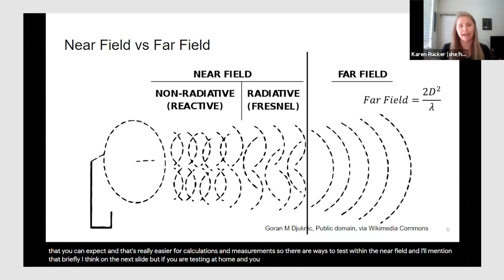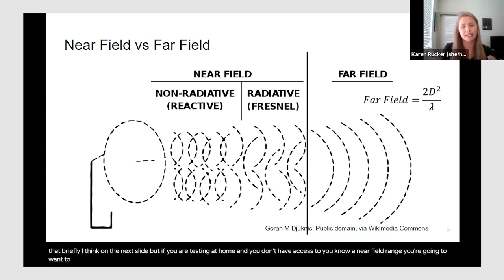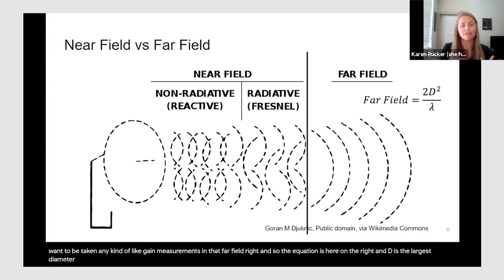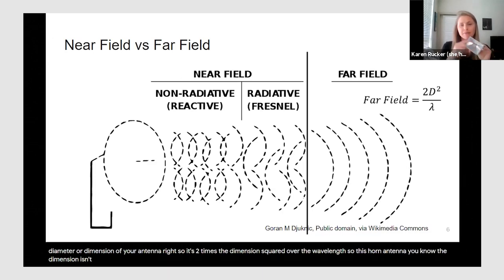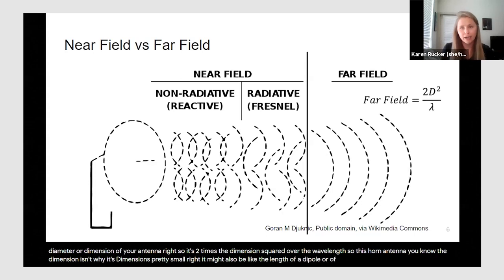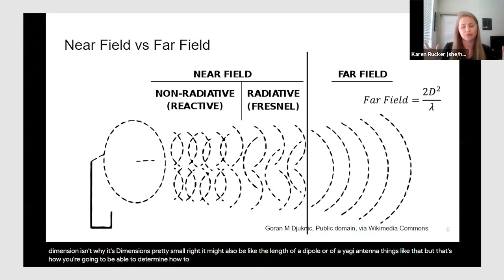If you are testing at home and don't have access to a near field range, you'll want to be taking gain measurements in the far field. The equation is on the right: it's 2D² divided by the wavelength, where D is the largest dimension of your antenna. So for a horn antenna that might be its widest dimension; for a dipole or Yagi it might be the length. That's how you determine how far away to set your receiving antenna to get far field behavior for measurements.